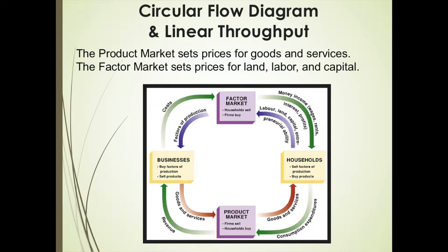Let's look at this flow diagram and note that we have money flowing first as wages from the factor market at the top for labor. Income also comes in the form of interest payments for capital, as well as rent for land. Households privately own these factors of production — land, labor, and capital — in a capitalistic economy. They sell these privately owned factors to businesses and earn an income by doing so.